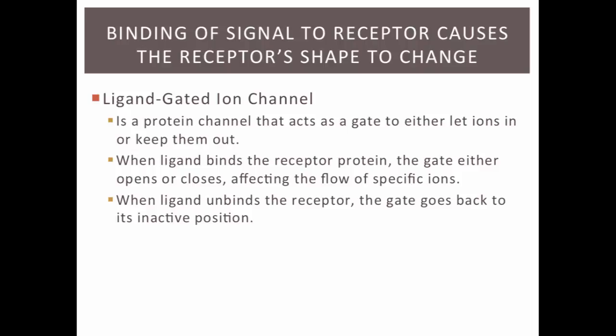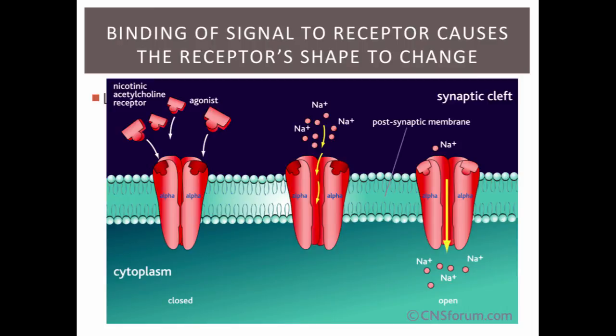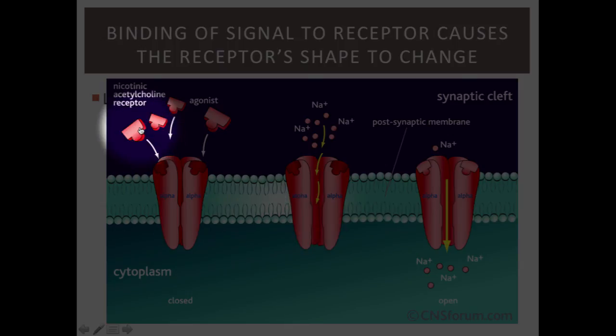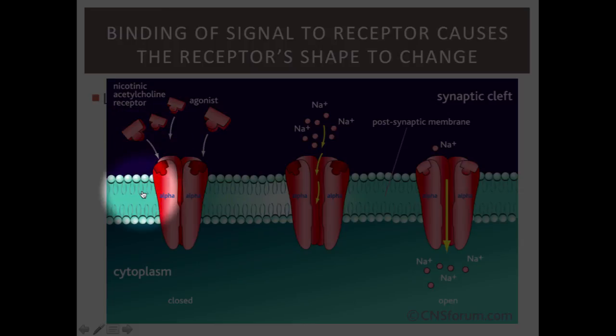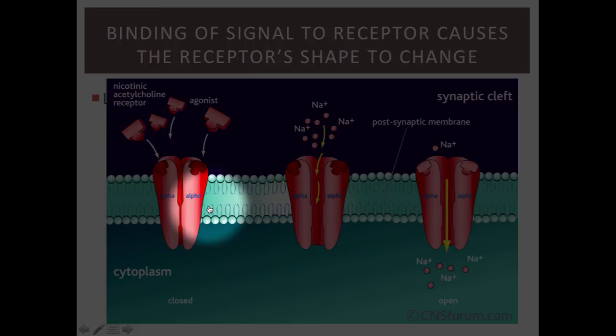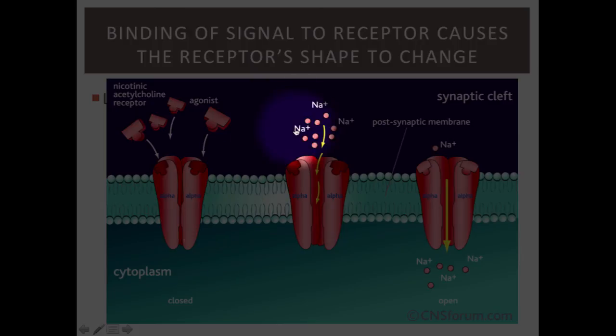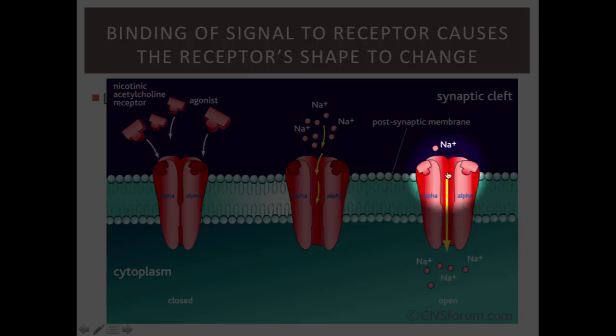Finally, we have ligand-gated ion channels. They're a protein channel that acts as a gate to either let ions in or keep them out. When a ligand binds to the receptor protein, the gate either opens or closes, affecting the flow of a specific ion. When the ligand unbinds the receptor, the gate goes back to its inactive position. Here's an example: before the ligand binds, the ion channel is closed and the ion cannot flow into or out of the cell. Once the ligand attaches, the ion channel opens, allowing a particular ion to diffuse into or out of the cell.